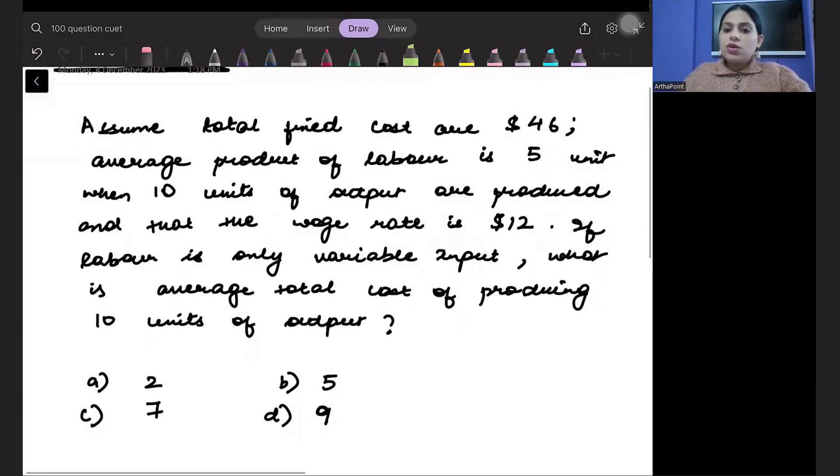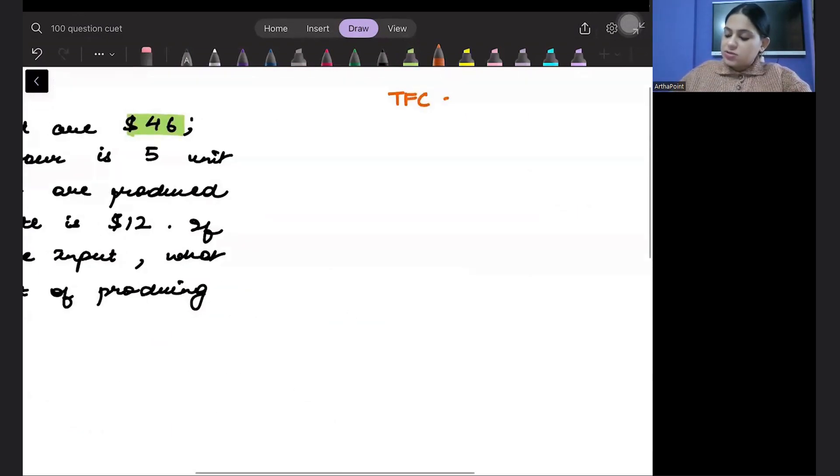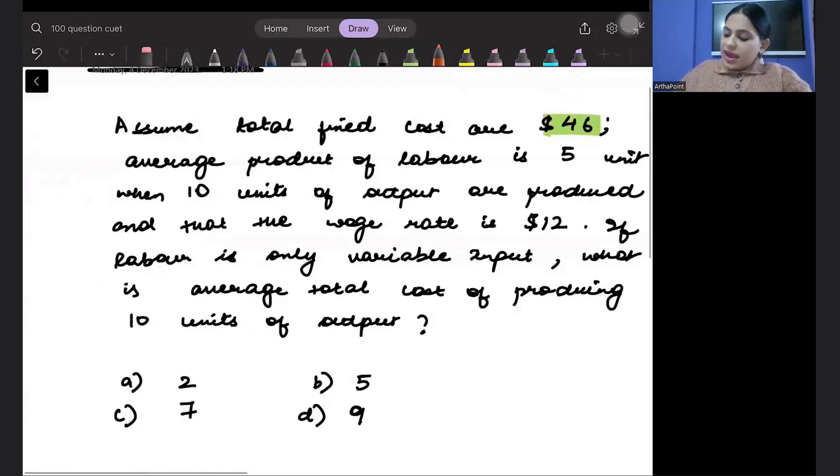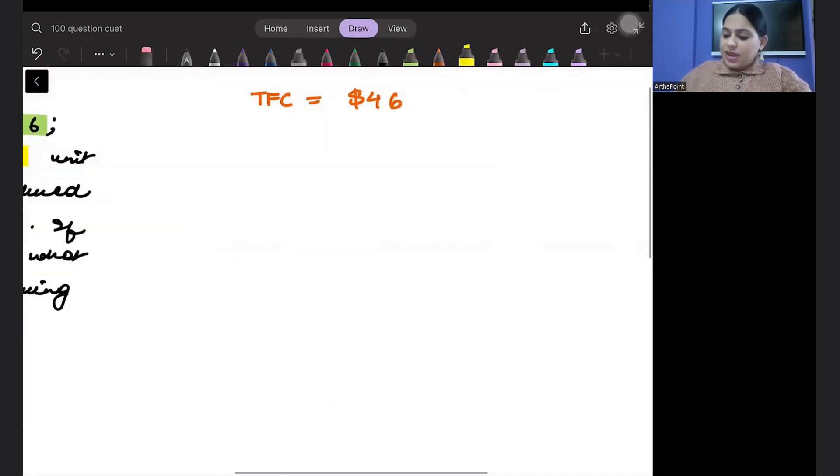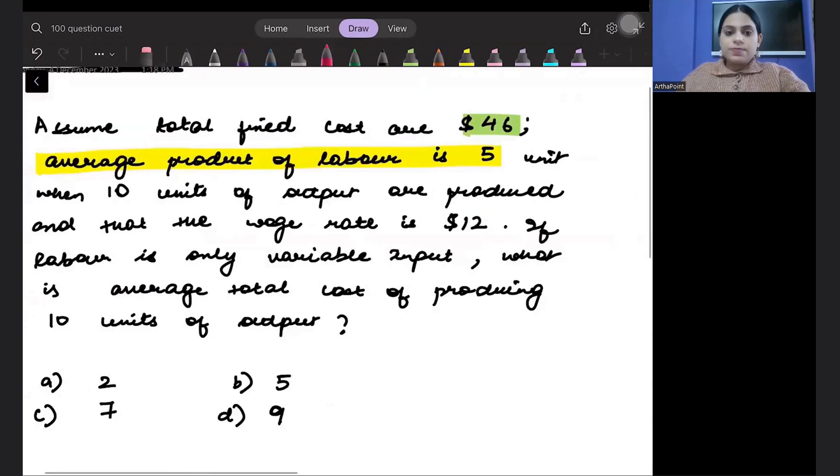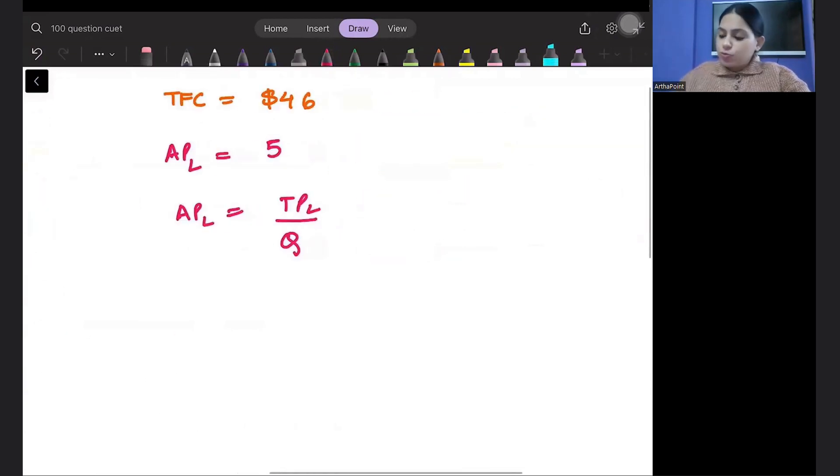Assume total fixed costs are $46. TFC is $46. Average product of labour is given as 5. What is average product of labour? It is total product of labour divided by output. When 10 units of output are produced, how much output is produced?